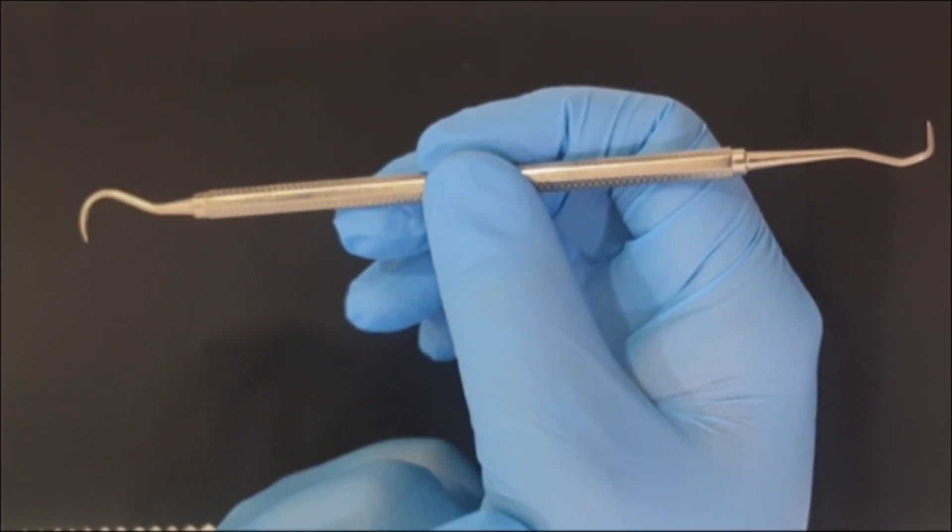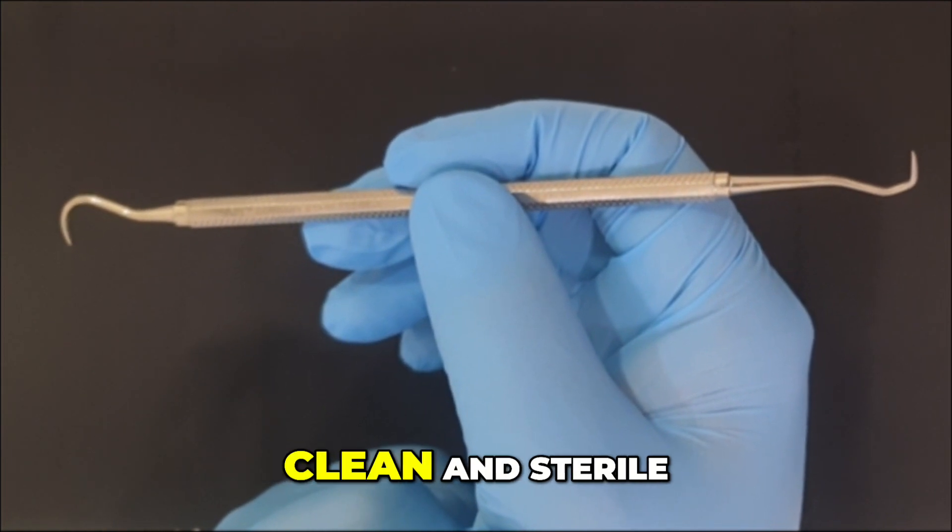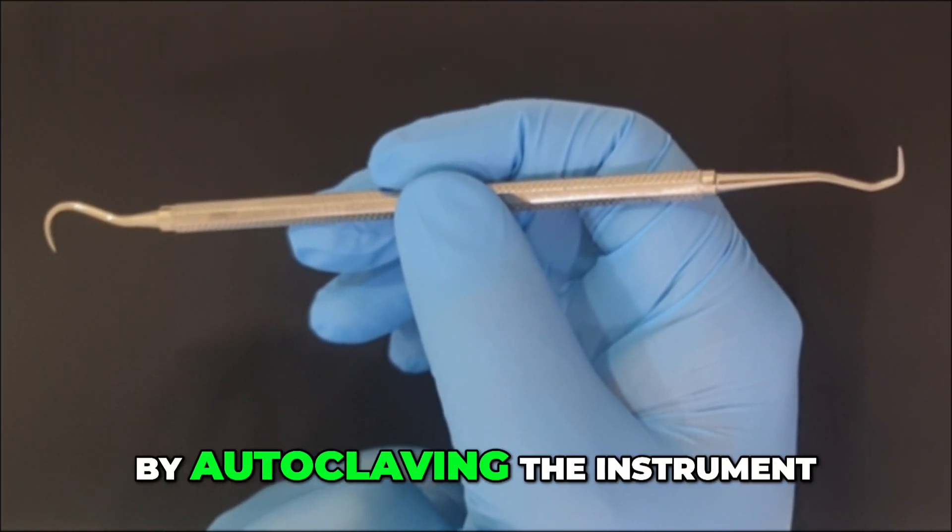The next principle is the condition of the instrument. The instrument should be clean and sterile. You can make sure the instrument is sterile by autoclaving the instrument.